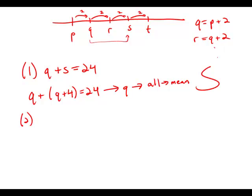Now forget statement number one. Statement number two tells us that the average of Q and R is 11. So Q plus R divided by two is 11. Q plus R equals 22.